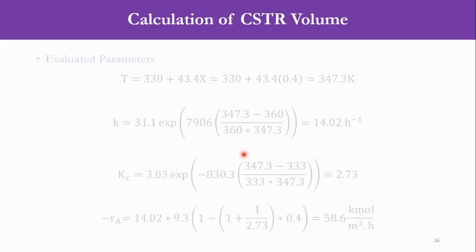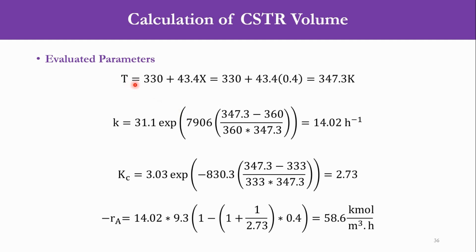So we have to calculate now the CSTR volume. We know the temperature equation: T = 330 + 43.4×X. X is 0.4, so accordingly this temperature comes out as 347.3 Kelvin. Now we simply have to put the value of temperature in the K and Kc equations. We will get the value of K as 14.02 per hour and Kc as 2.73. Accordingly, if you see, we have been given the value of Kc at 333 and we have to calculate the value of Kc for 347.3 Kelvin.